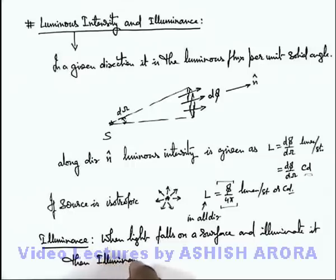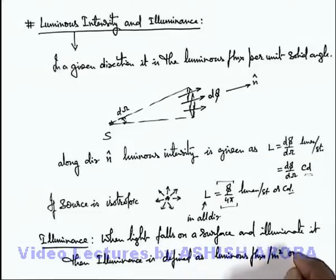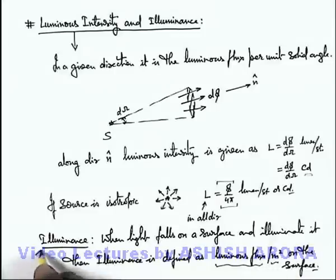Luminous flux per unit area on the surface where the light is falling. So the amount of luminous flux per unit area which is falling on the surface we term as illuminance. Illuminance is always defined in respect of a surface on which light is illuminating it.